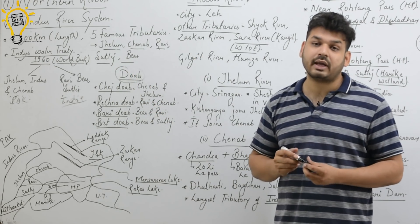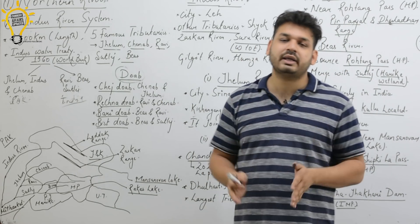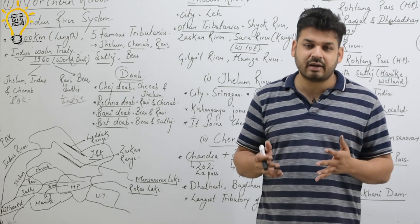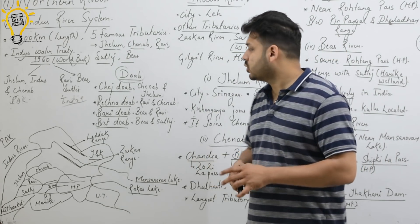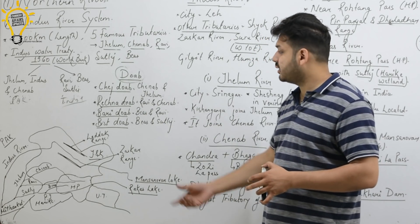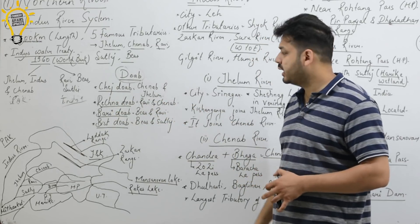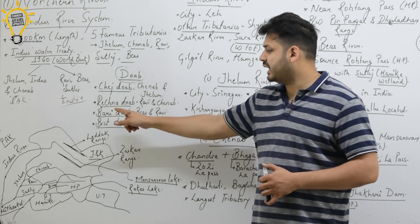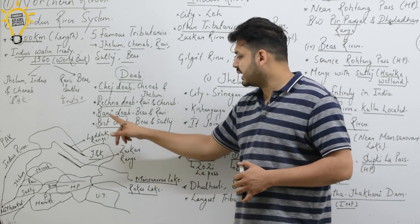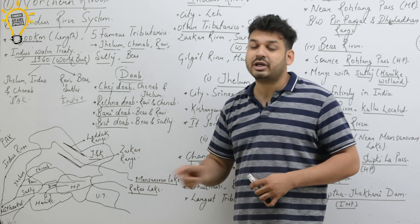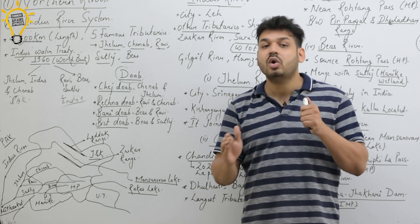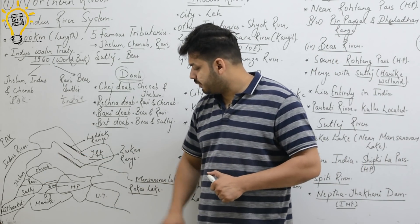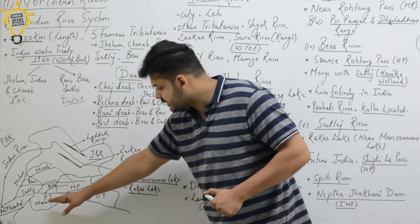An important geographical concept: a Doab is the area between two rivers — it is a very fertile area. You can see in the diagram that this is Jammu and Kashmir, this is Himachal Pradesh, this is Uttarakhand, and this is Punjab. The rivers originate near Mansarovar Lake, which is part of China, and enter into Jammu and Kashmir.